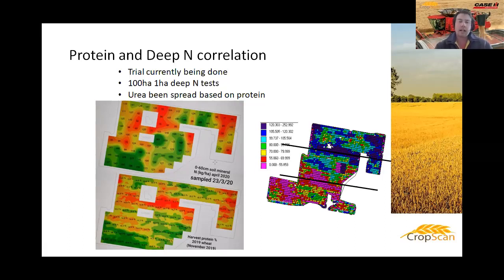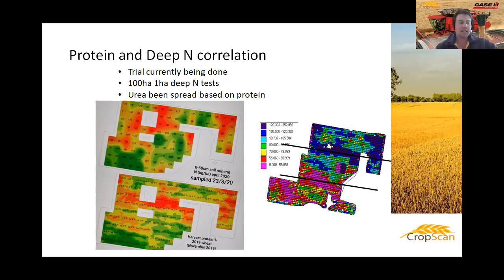I was wondering whether we should be spreading variable rate again given the big differences. I did some deep ends in differing areas and they actually came back the same, so I've narrowed our ranges down a little bit and it's going back towards more of a blanket rate for the last application. It'll be very interesting to see what happens at harvest time.